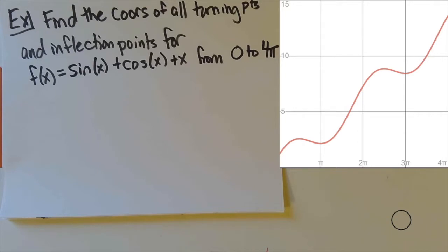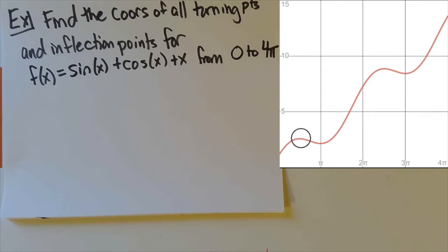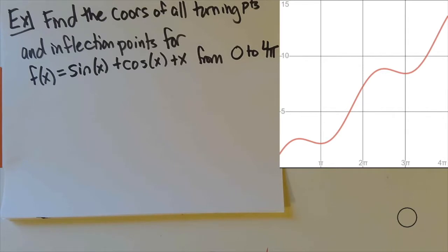Go ahead and pause the video, look at the graph, and figure out where you think the turning points and inflection points are, and then I'll come back and go over it carefully. So, turning points first — let's count how many we expect and where they are. There's the first one, increasing to decreasing, second, third, and fourth. So I'm expecting four turning points when I'm done with this.